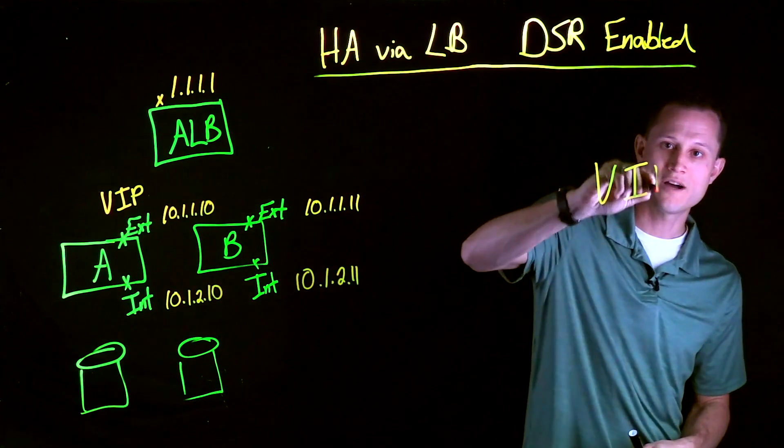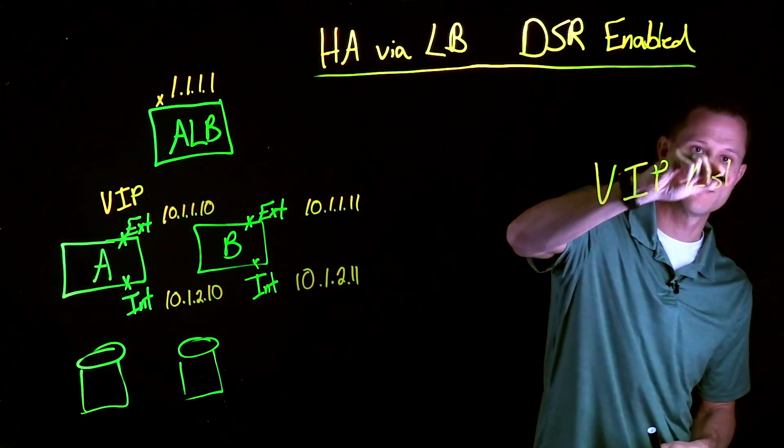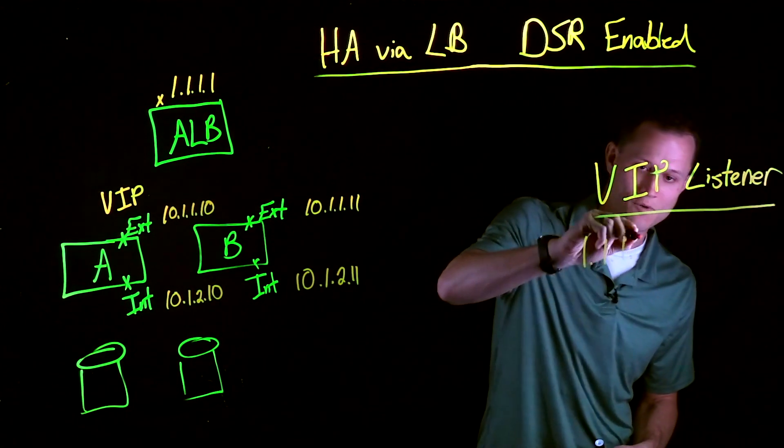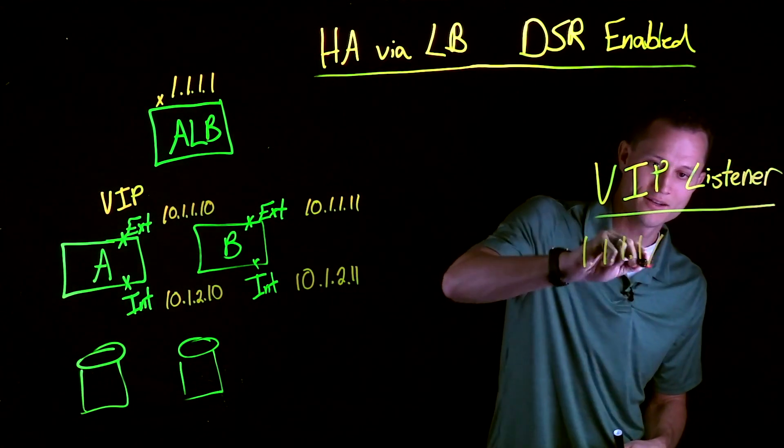Let's go over here and show how that listener would actually be configured. It's quite simple. We have 1.1.1.1 slash 32.